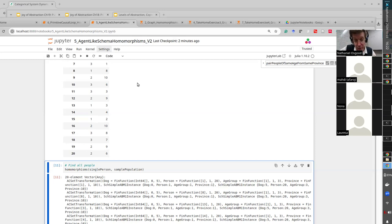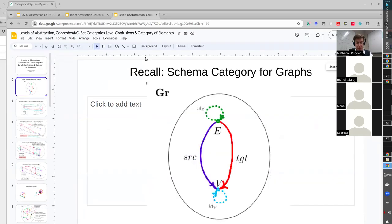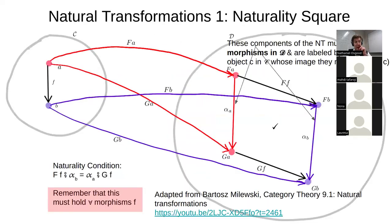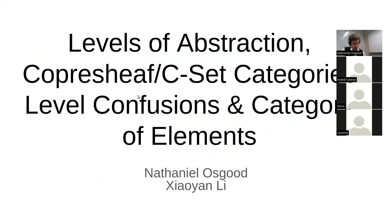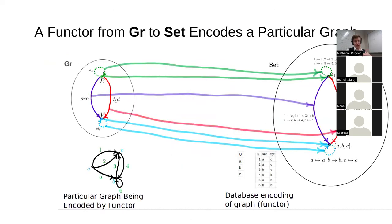One advantage we've already talked about in the small with these categorical data structures is that we can reason about them — not as one-off solitudes, not as each graph in isolation wedged into our code, but as mathematical structures. This lets us reason about their commonalities and the mappings between them. For each of these — graphs, discrete dynamical systems, the agent-based schema, causal loop diagrams — we could capture the notion mathematically because it's a mathematical object, and we can reason about its mappings.